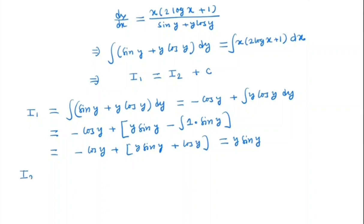Now we try to compute what is I2. I2 is x times 2 log x plus 1 dx. So if we simplify this we have 2 x log x plus x dx.